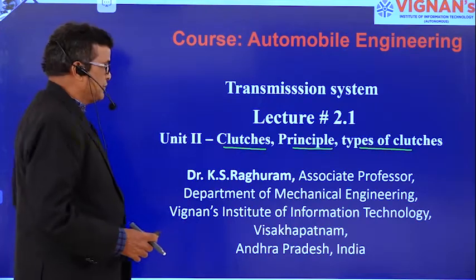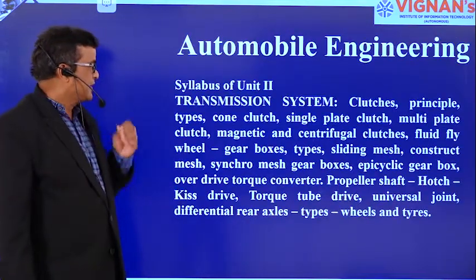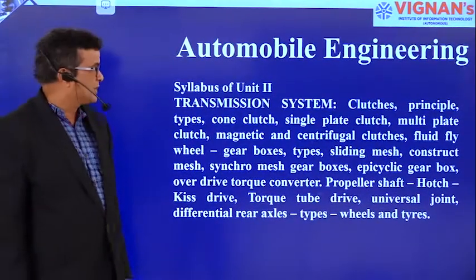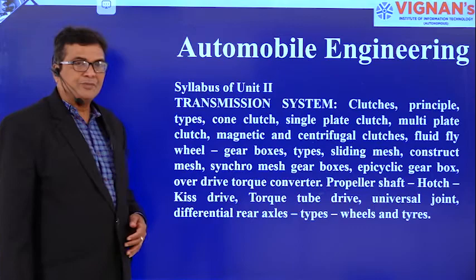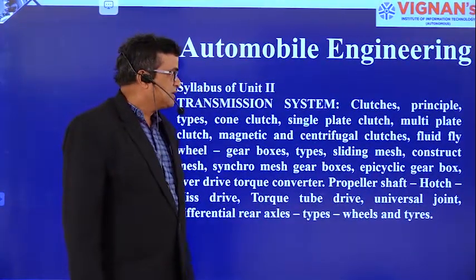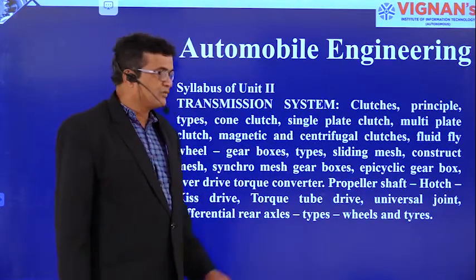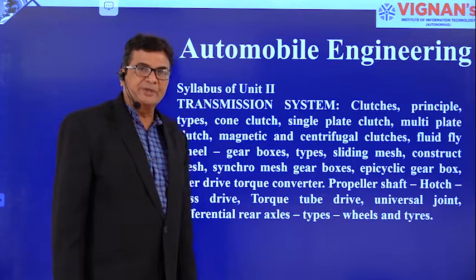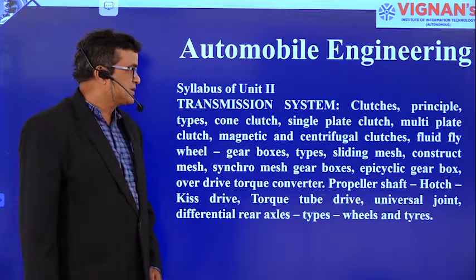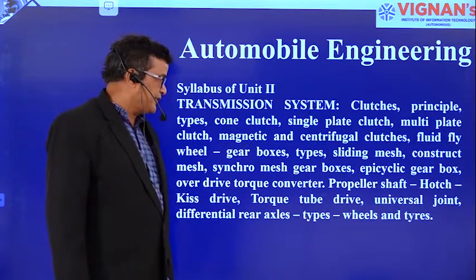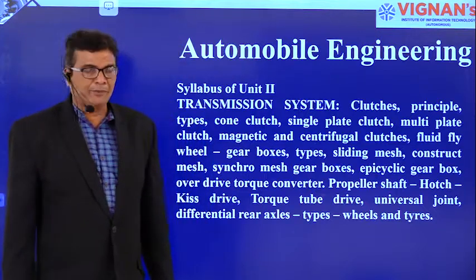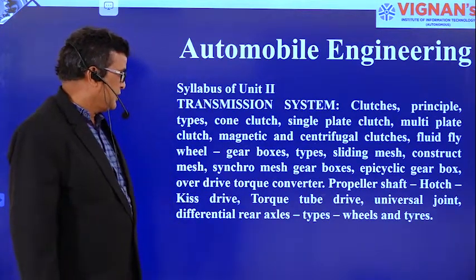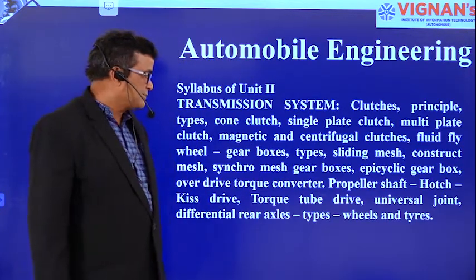The syllabus of the second unit is like this. Transmission system is the main topic. Under it: clutches, principle of clutches, types of clutches. The types of clutches are cone clutch, single plate clutch, multi plate clutch, magnetic clutch, centrifugal clutch, fluid flywheel, gearboxes, types of gearboxes, sliding mesh gearbox, constant mesh gearbox, epicyclic gearbox, power drive torque converter, propeller shaft, types of propeller shafts, hot skis drive, torque tube drive, universal joint, differential, rear axles, types of rear axles, types of wheels, and tires.